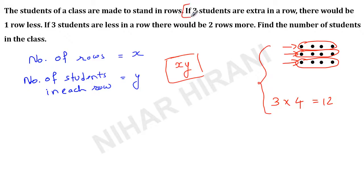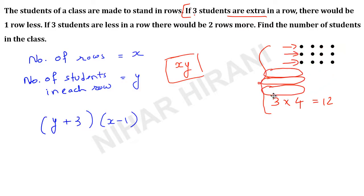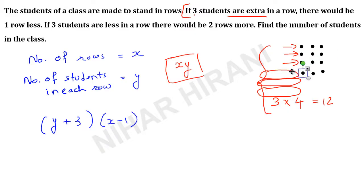Now let us work on the first statement: if 3 students are extra in a row, there would be 1 row less. So 3 students are added to each row, making y plus 3 students per row. The number of rows becomes x minus 1. As I explained, if we rearrange the dots the total number of students does not change — it is still x times y.